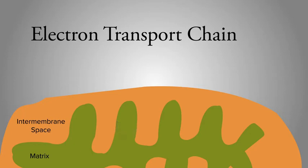How does the electron transport chain work? Carrier proteins in the membrane of mitochondria remove electrons from the electron carriers NADH and FADH2.